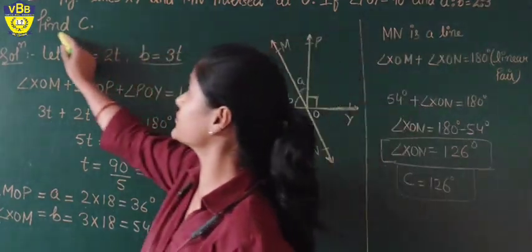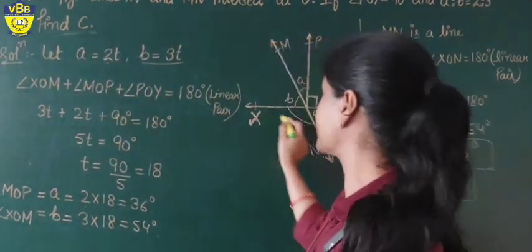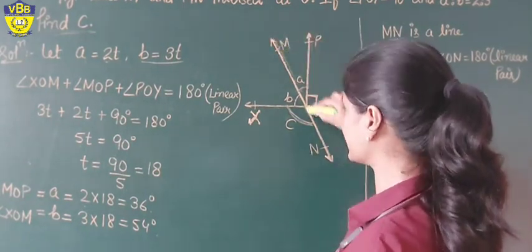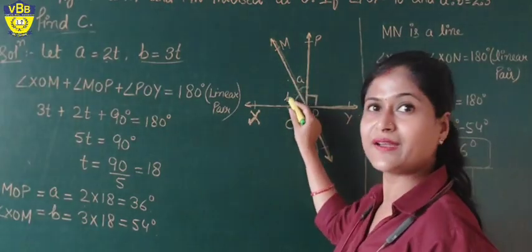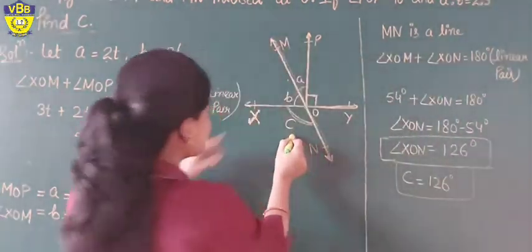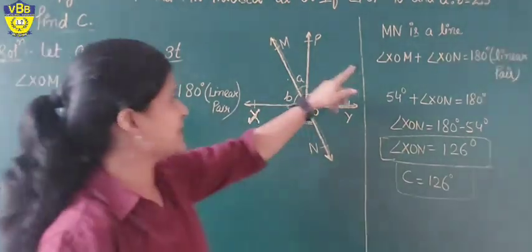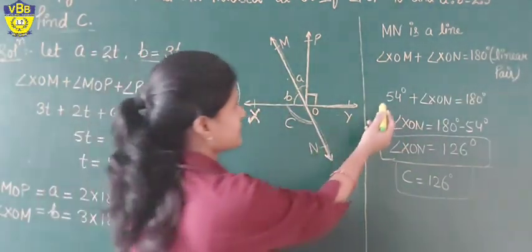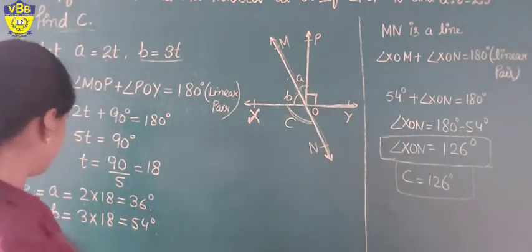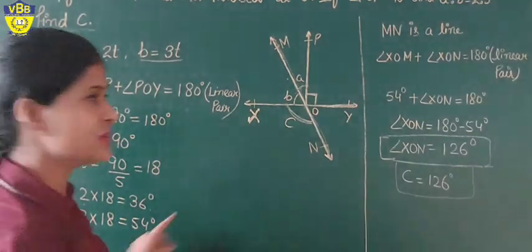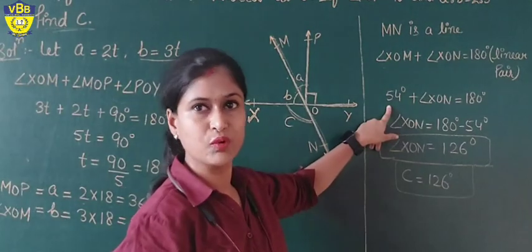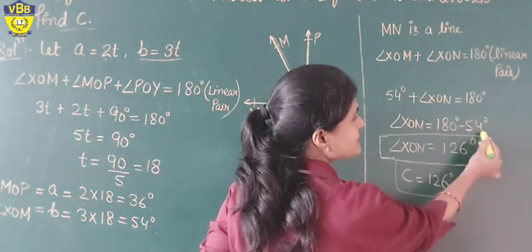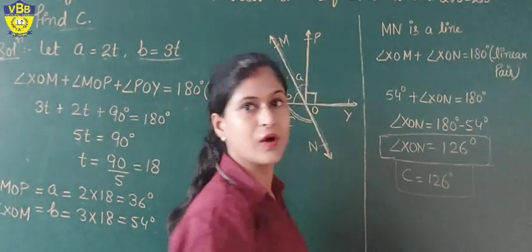Now we need to find the value of angle C. MN is a line, so angle B plus angle C equals 180 degrees. Angle B is 54 degrees, so 54 plus angle C equals 180 degrees. Transposing: angle C equals 180 minus 54, which is 126 degrees.